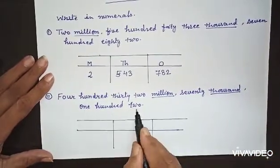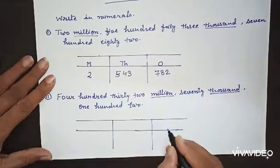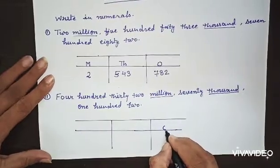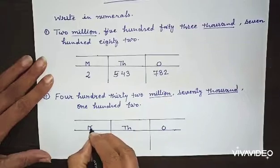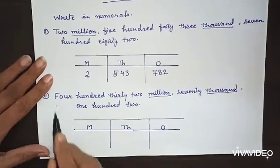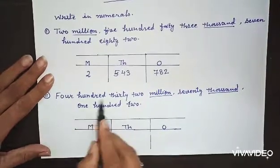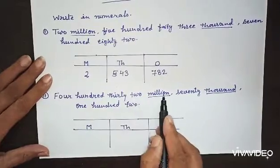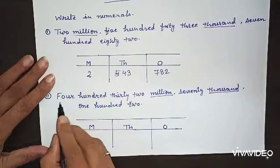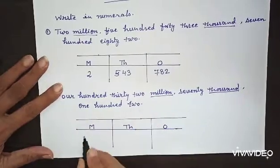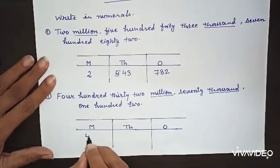Now first we will mark the periods: ones, thousands, and millions. Now we will read once again: four hundred thirty two million, and giving most rest on million, so four hundred thirty two will come down here, four hundred thirty two.